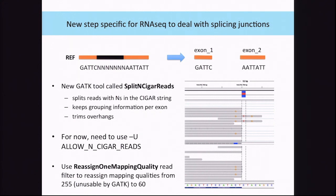The tool splits reads and keeps the grouping information, and it trims. Currently, you have to tell it to allow N-CIGAR strings, because all GATK tools, as I mentioned, don't expect to see N in the CIGAR string and usually throw an error. But if you use the --unsafe allow N-CIGAR string flag, it tells the tool to take the N into account. Of course this tool needs to take the N into account because it needs to process them, so you need to add that to the command line.